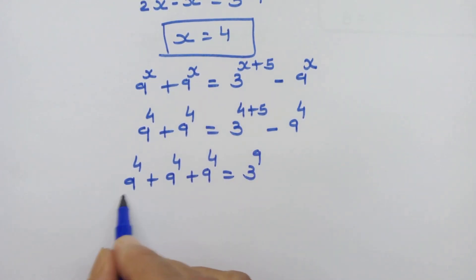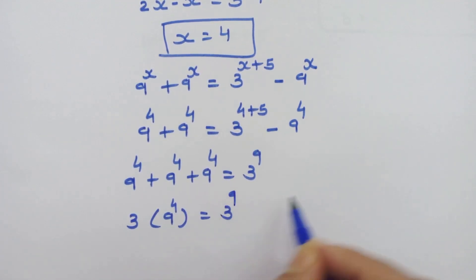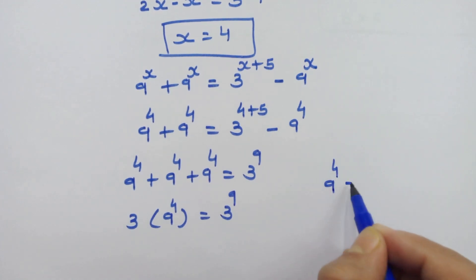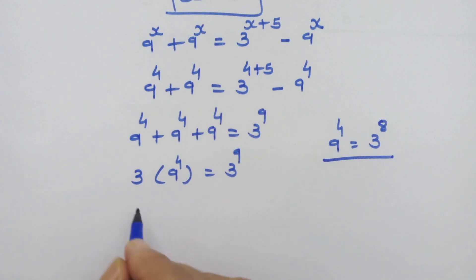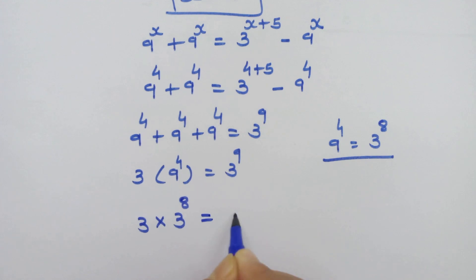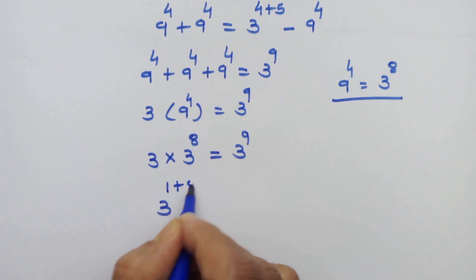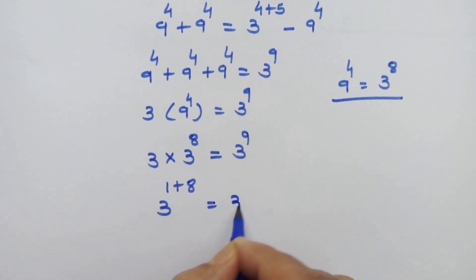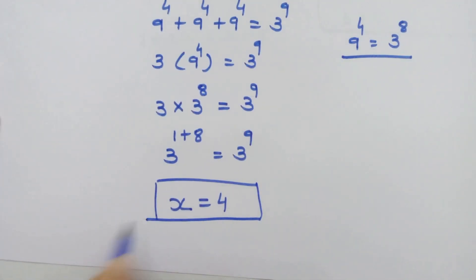That gives us 3 times 9 raised to 4, so we can write 3 into 9 raised to 4 is equal to 3 raised to 9. Now 9 raised to 4 is equal to 3 raised to 8, so we can write 3 into 3 raised to 8 is equal to 3 raised to 9, which gives 3 raised to 1 plus 8 equals 3 raised to 9. This confirms that x equals 4 is the correct answer.